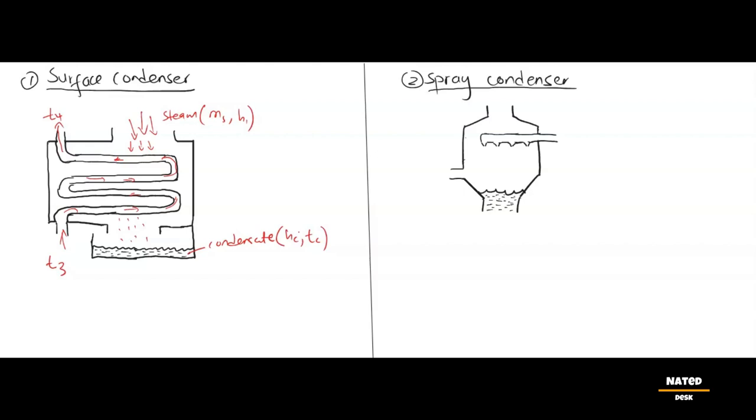Now we know how surface condensers operate. So let's look at the formula, how to calculate the mass of cooling water. We have two approaches to consider here.